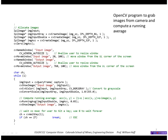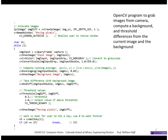The next one computes a running average instead of differencing: it grabs an input image and adds it to an accumulated image with an alpha weighting constant of 0.03. Finally, the last one computes the running average but then takes the difference with the current image and thresholds those difference values.